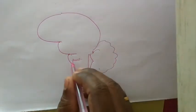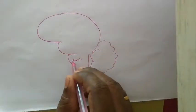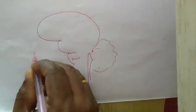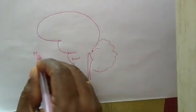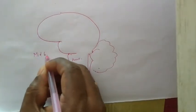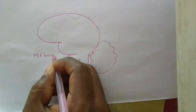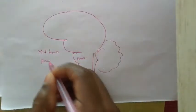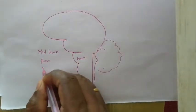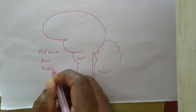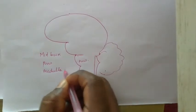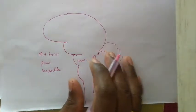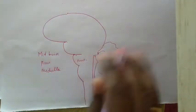So what are the parts of the brain stem? The brain stem consists of midbrain, pons, and medulla. Today we are going to study in detail about pons.